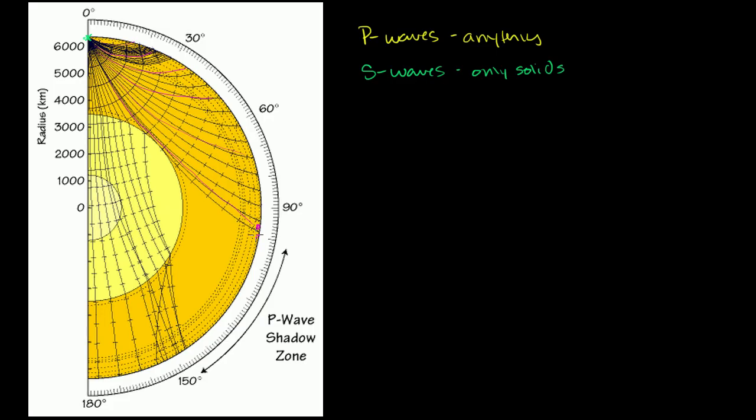But then all of a sudden at 105 degrees, and so we're measuring zero degrees here and we're going outwards like that, all of a sudden at 105 degrees and further, you stop measuring S waves. They don't get, for some reason, you would think that the S waves would get over here, maybe they would be a little bit weaker, but they just abruptly stop.